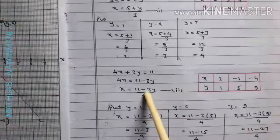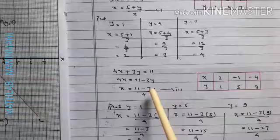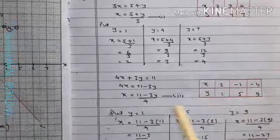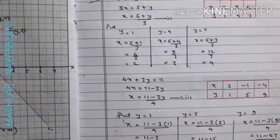Then go on adding: 4 plus 1 is 5, 4 plus 5 is 9, so you get this table. These are the two tables - this is equation 1, this is equation 2. Now we will plot.